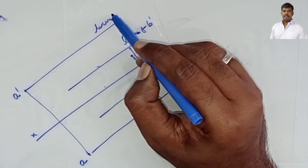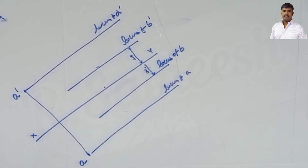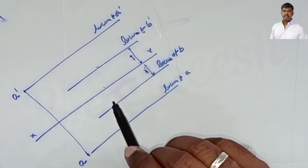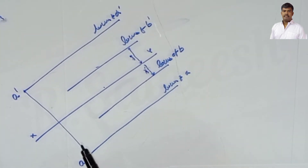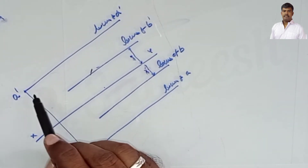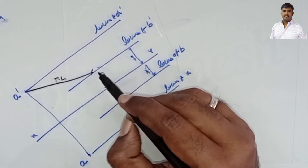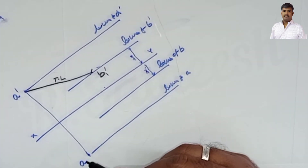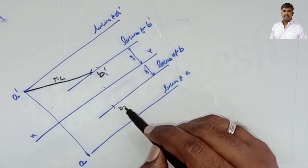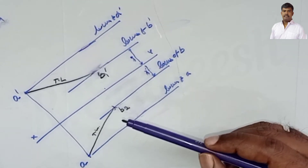Similarly, from A-dash draw the locus line of A-dash, and draw the locus line of A. Now we know where A-dash and A are, and the true length is given as 60mm. Take the compass with A-dash as center, mark 60mm arc to intersect the locus line - that point is B1. Similarly for the top view, with A as center mark the true length 60mm to get B2.